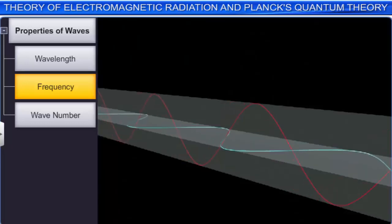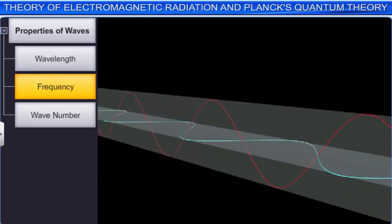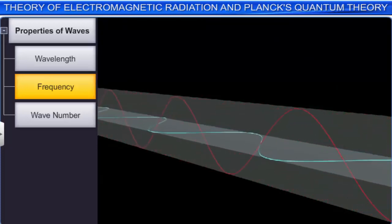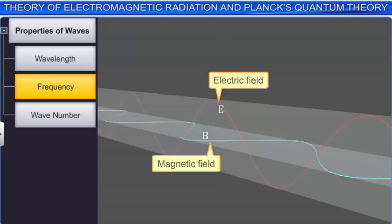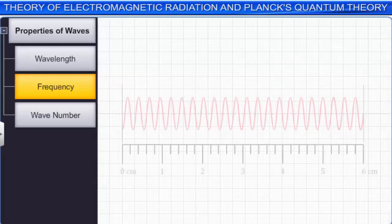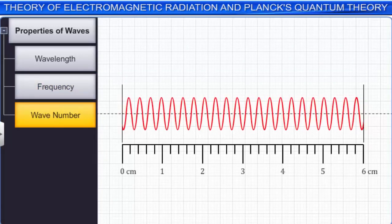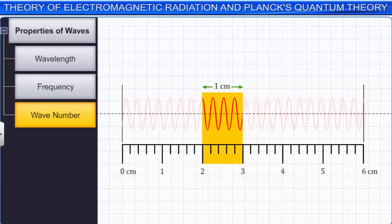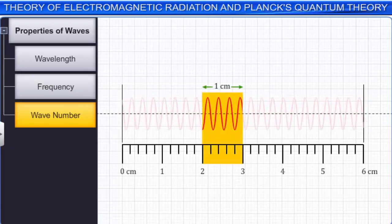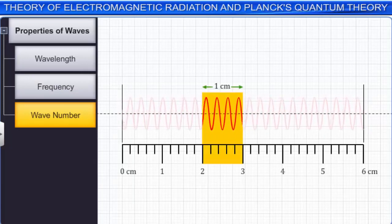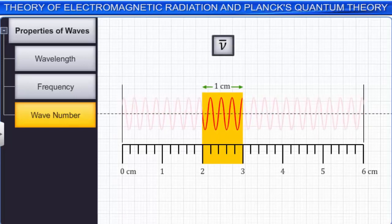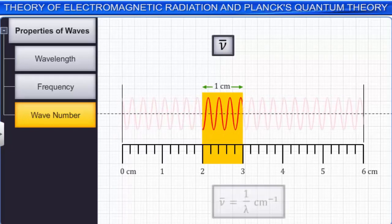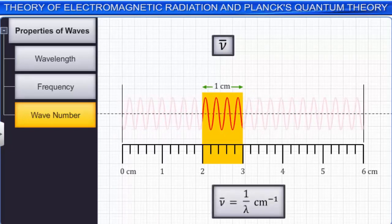Electromagnetic waves travel through empty space with the velocity of light. The last characteristic of a wave is the wave number, defined as the number of wavelengths per unit length. It is denoted by the symbol nu-bar and given by the equation: nu-bar = 1/λ per centimeter.